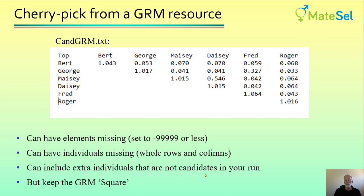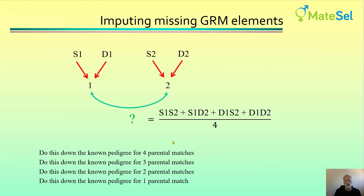You can include extra individuals that are not candidates in your run, which means that if individuals lose candidate status in future runs, you can still keep them in this file and continue to add to it, doing weeding out of obsolete information in the long run. The important thing is to keep this GRM square — the same number of rows and columns, and the same order of individuals in the columns and in the rows. We can have individual elements or complete rows and columns with this missing information code, and this is how we do imputation.